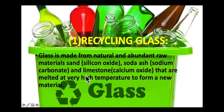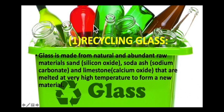Sand, soda ash, and limestone are not sustainable resources. The best glass is made from especially pure sand, which is mined from deposits made long ago. Making new glass requires heating these chemicals to very high temperatures, which releases a lot of carbon dioxide. A lot of carbon dioxide in the atmosphere can trap more heat and lead to global warming. However, used glass can be crushed and melted at high temperature and then used to make new glass objects.